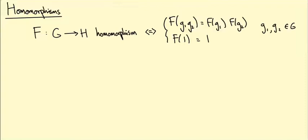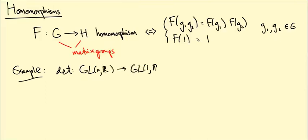We're going to focus on the case where G and H are matrix groups. Let me give you a quick example: the determinant gives us a homomorphism from GL(n,R) to GL(1,R), namely the matrix A goes to the one-by-one matrix det(A).